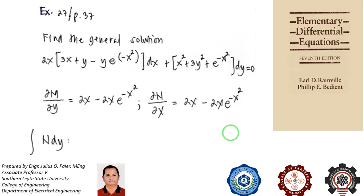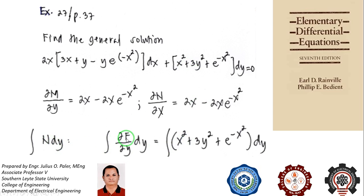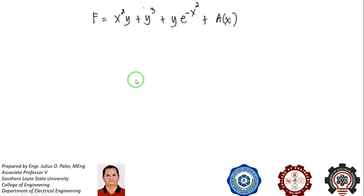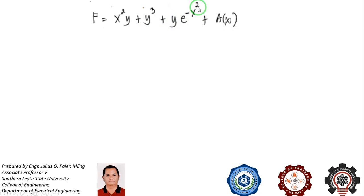For this example, instead of integrating M dx, let's try to perform the integral of N dy. The integral of N dy equals the integral of x squared plus 3y squared plus e to the negative x squared, all with respect to y. Since x is constant in this integration, x squared dy gives us x squared y. The integral of 3y squared dy gives us 3y cubed over 3, which simplifies to y cubed. And e to the negative x squared dy gives us y e to the negative x squared, plus a constant of integration that is a function of x.